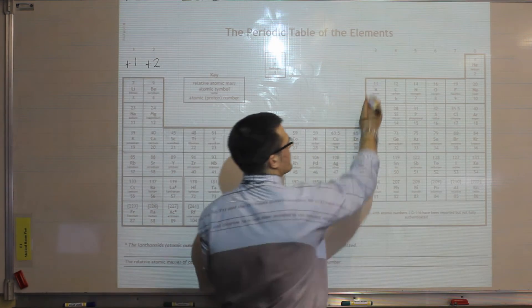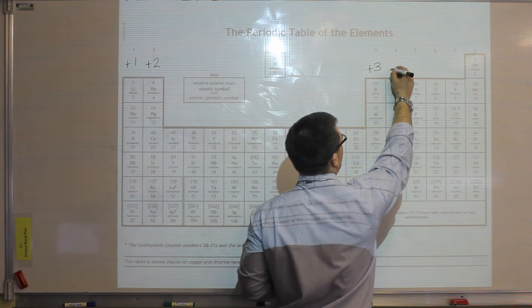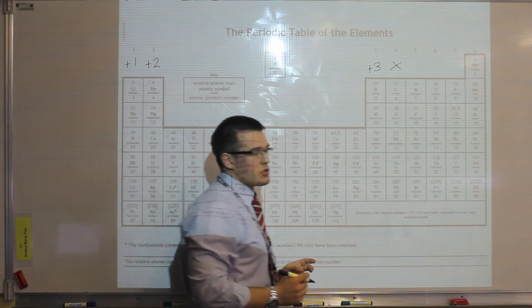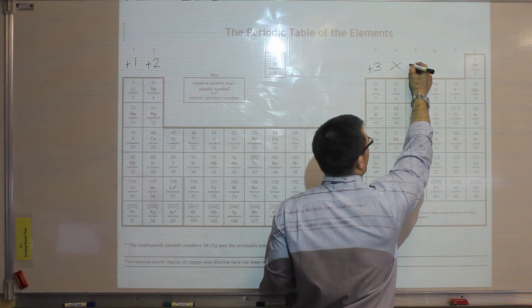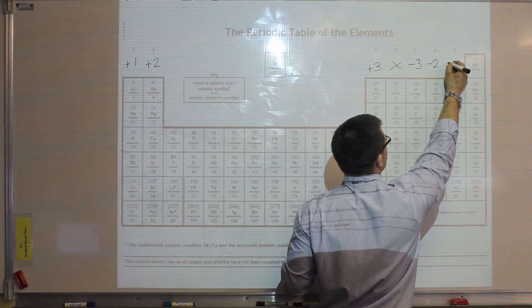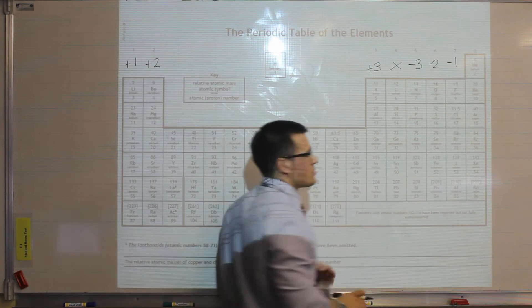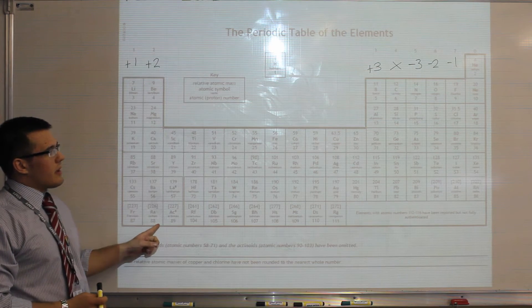We then go over to group 3, which will form plus 3. We miss out group 4, because carbon will form covalent bonds rather than ionic bonds. And then group 5 we put minus 3, group 6 minus 2, and group 7 minus 1, because they will gain electrons rather than lose them.